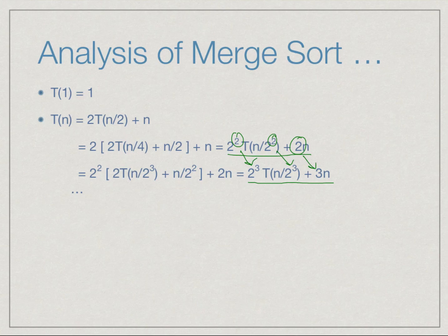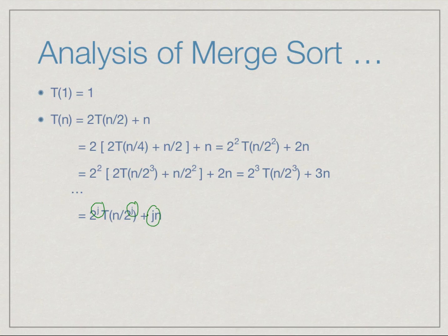So in this way, if we keep going after j steps, we will have 2 to the j times T(n/2 to the j) plus j times n. Now how long do we keep doing this? We keep doing this till we hit the base case.